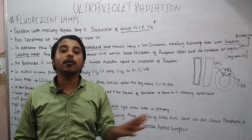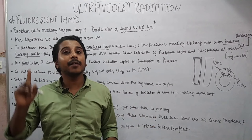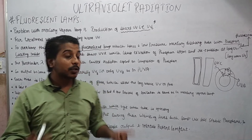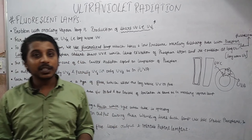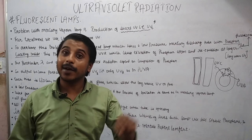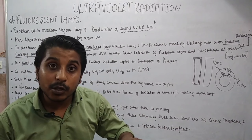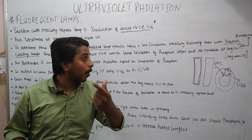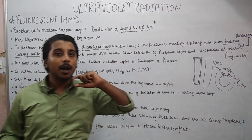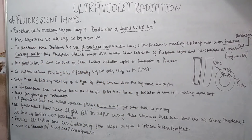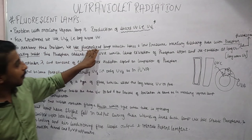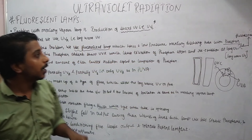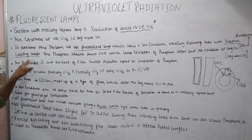UVC is not colorful; UV is invisible, as I explained in the first video. So UVC is invisible, but if you ask why the color is bluish white, it is due to the fluorescence property of the phosphor. To overcome this problem, we use the fluorescent tube which has a low pressure mercury discharge tube with phosphor coating.